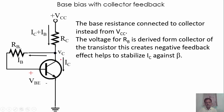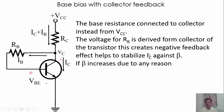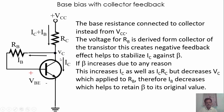This negative feedback helps stabilize the collector current against any change in beta — beta means the current gain of the transistor. If, for any reason, there are changes in beta, this base resistance feedback helps stabilize the collector current. If beta increases, IC also increases, and as IC increases, the voltage drop across RC — that is RC times IC — increases.